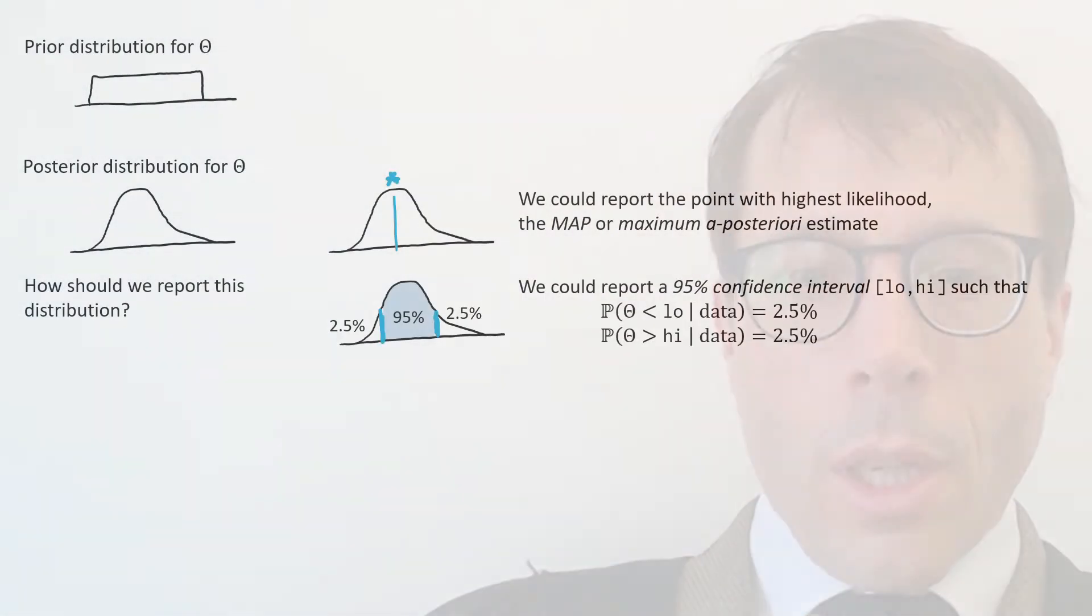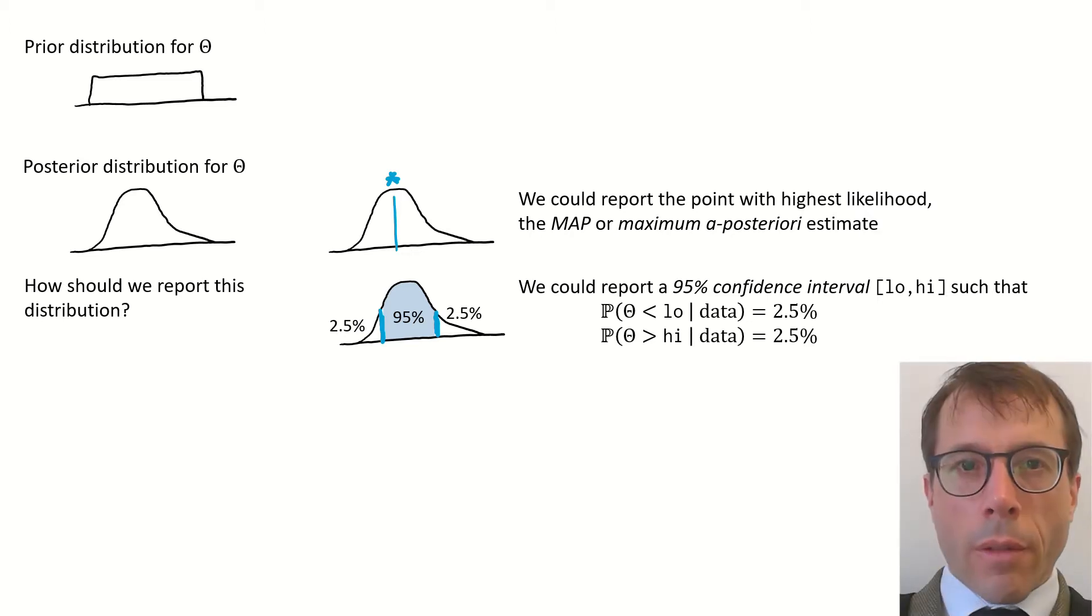Here's something that's more honest than a point estimate. We could report a confidence interval. We could say theta is somewhere in this range. It's common to report what's called a 95% confidence interval, an interval where we're 95% certain contains theta. This 95% is a bit arbitrary, but at least it's honest, because we're clearly communicating that we're uncertain about the true value of theta.